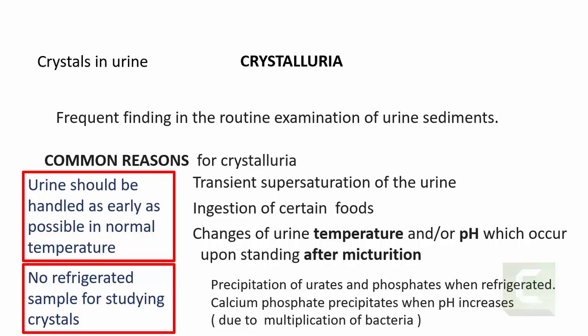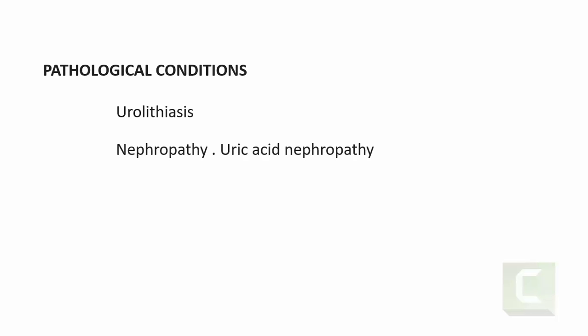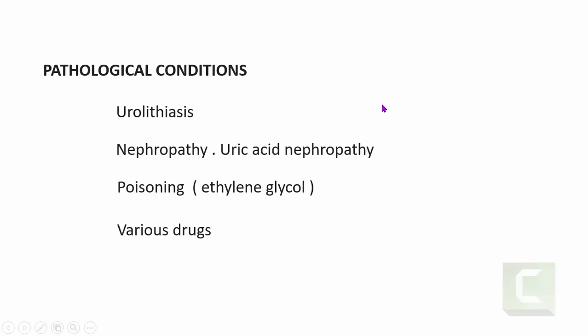What are the pathological conditions where crystals are seen in urine? One important condition is urolithiasis — the formation of calculi in the urinary system. It can be due to nephropathy, particularly uric acid nephropathy, caused by accumulation of uric acid. It can be seen in poisoning, particularly acute ethylene glycol poisoning. Various drugs are also implicated, but drug-induced crystalluria will not be discussed in this tutorial.